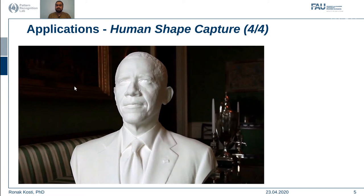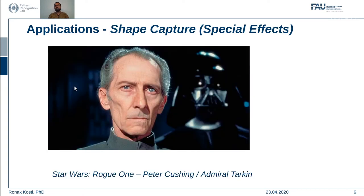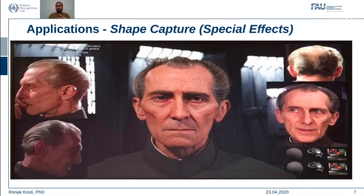Another application is shape capture. Similar to the previous example, here you see a character named Admiral Tarkin, who featured in the Star Wars movie franchise. However, he recently passed away, and in order to bring back his character, the movie producers created something similar to what they did with digitizing President Obama's 3D shape. They collected a lot of images of this character from previous movies and generated a realistic-looking character in the new Star Wars movie called Rogue One.